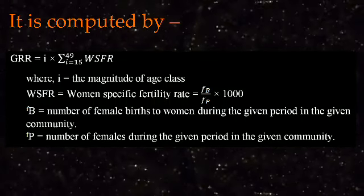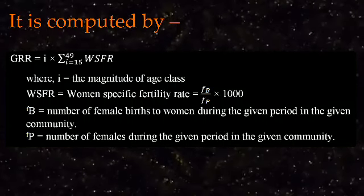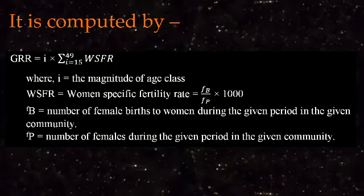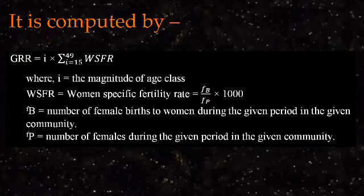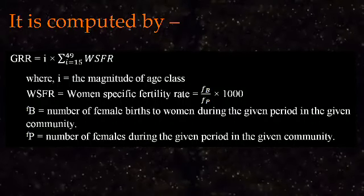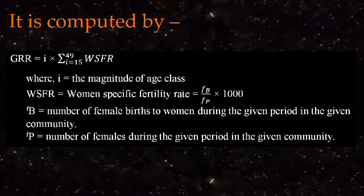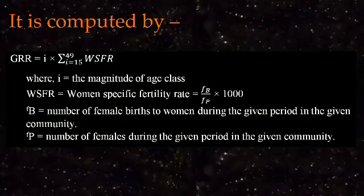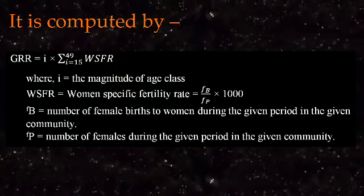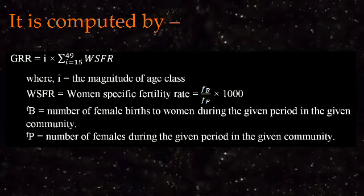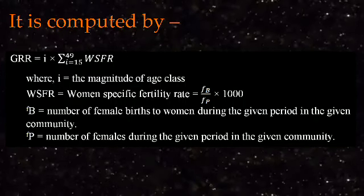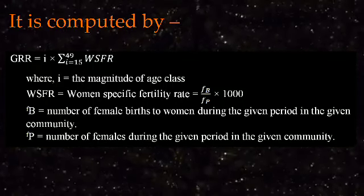WSFR is computed by the formula: WSFR equals female birth (FB) divided by female population (FP), multiplied by 1000, computing the ratio for 1000 women. After finding GRR, divide this value by 1000 so that we can estimate the number of children born in the lifetime of one woman. GRR per woman is computed by the formula: GRR value divided by 1000.